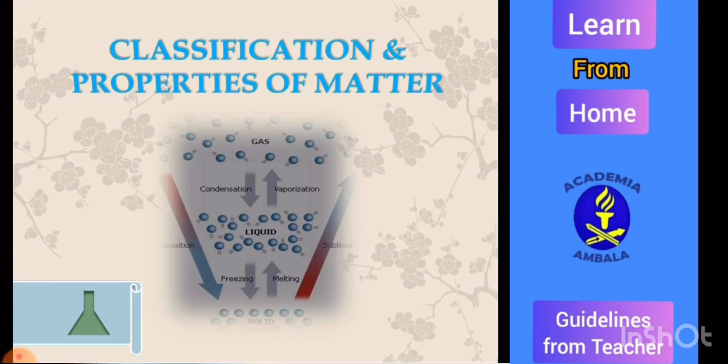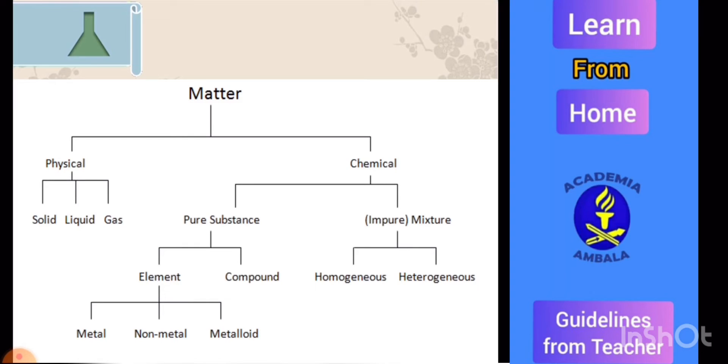Classification of properties of matter: matter is classified into two categories. First is physical classification and second is chemical classification. On the basis of physical classification, matter is further classified into solid, liquid, and gas. On the basis of chemical classification, matter is classified into pure substance and mixture. Pure substances are further classified into elements and compounds, and elements are further classified into metals, non-metals, and metalloids. Whereas impure substances or mixtures may be categorized into homogeneous and heterogeneous mixtures.